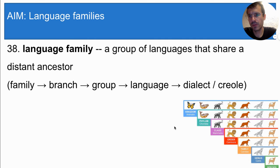Here is the order of taxonomy for language. The broadest category is the family, followed by branch, and then group, and then the language itself. And finally, within languages, we have a very specific category called a dialect or a creole. You'll learn more about dialects and creoles later.